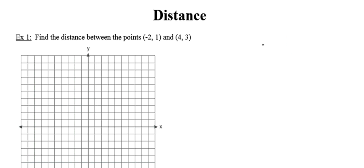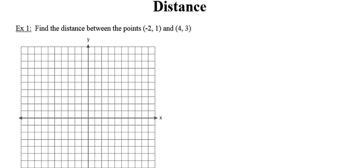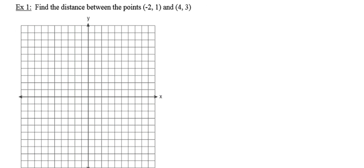Let's go ahead and jump right into this one. It says find the distance between the two points whose coordinates are negative 2, 1 and 4, 3. The first thing I'm going to do is put those two endpoints on my coordinate plane. So I've got negative 2, 1 right there, and I've got 4, 3 right there. There's the line segment they're asking me to find the distance of. If that were a perfectly horizontal or vertical line segment, I could just count the boxes. But this is neither perfectly horizontal nor perfectly vertical. So I'm going to break it apart into two pieces that are perfectly horizontal and perfectly vertical. I'm going to consider that red line segment and that purple line segment.